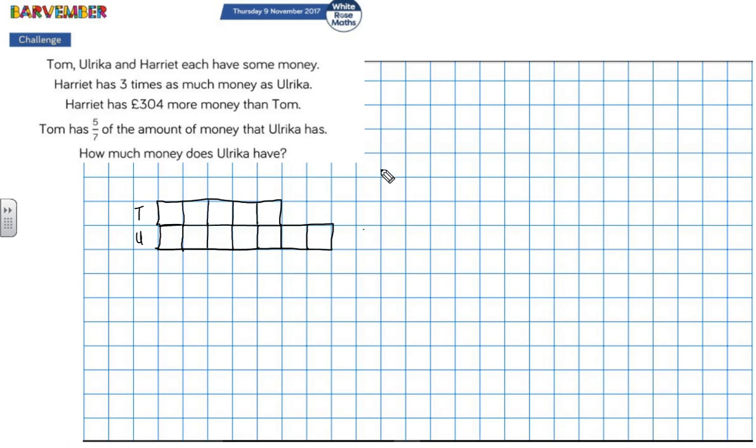Right, what can we look at now? Harriet has £304 more money than Tom. Harriet has three times as much money as Ulrika. Now, we now know how much money Ulrika has. So, we're now going to do Harriet's block. And we know that that would be the same as Ulrika. So, another seven blocks. Now, that's now twice as much as Ulrika. And that's now three times as much as Ulrika.